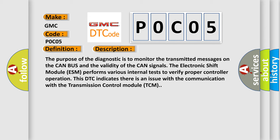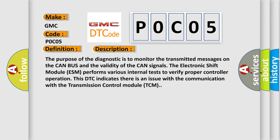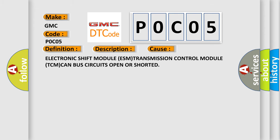This DTC indicates there is an issue with the communication with the transmission control module TCM. This diagnostic error occurs most often in these cases: electronic shift module ESM, transmission control module TCM, CAN bus circuits open or shorted.